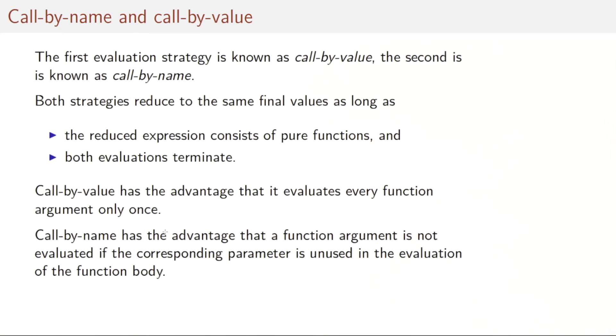You've seen two ways to evaluate the same expression. The first evaluation strategy is known as call by value. The second is known as call by name. An important theorem, in fact of lambda calculus, is that both strategies reduce to the same final value as long as the reduced expression consists of pure functions and both evaluations terminate. Call by value has the advantage that every function argument is evaluated only once. Call by name has the advantage that a function argument is not evaluated at all if the corresponding parameter is not used in the evaluation of the function's body.